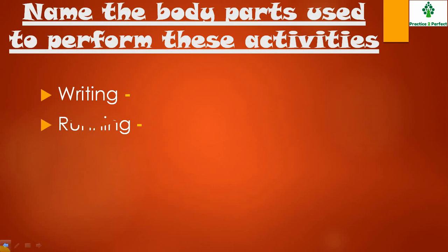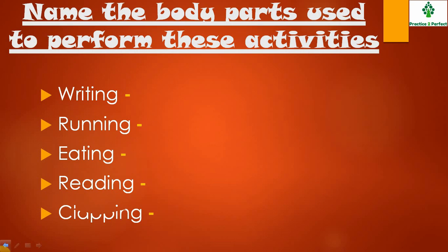In the next question there are some activities listed, like writing, running, etc. Here you have to mention the name of the different body parts that will be used to perform these activities. For example, for writing you use hands and fingers. In the same way you have to complete the other activities.